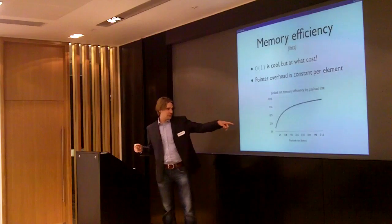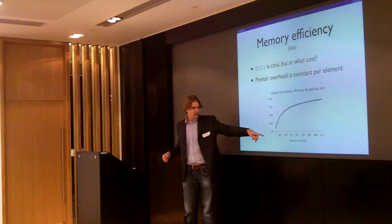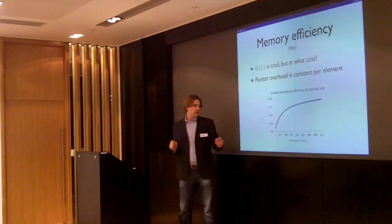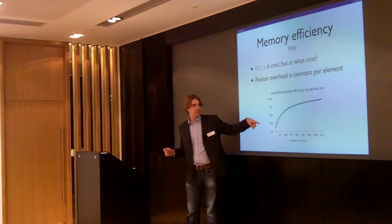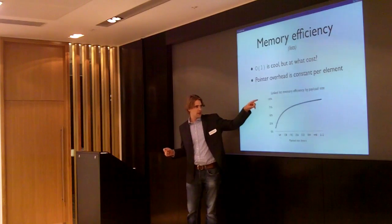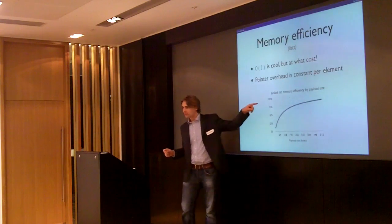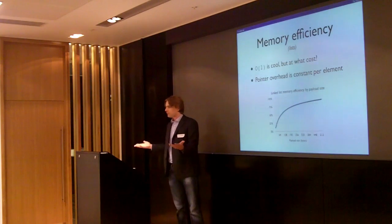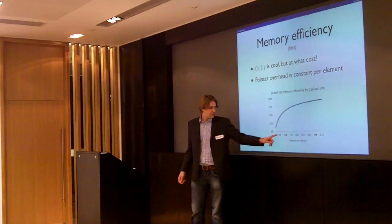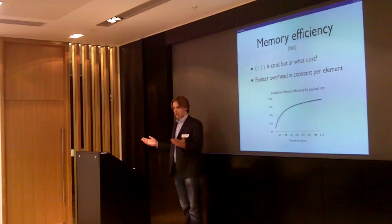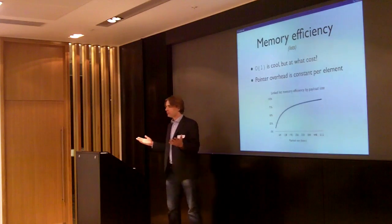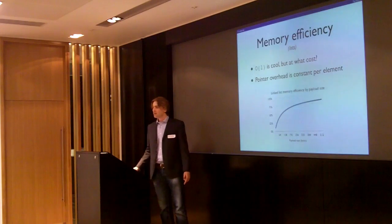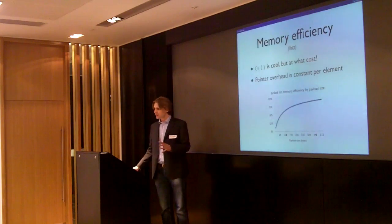I tried to visualize this in a graph, plotting the payload size of the different elements in the list against efficiency — defined as the actually used number of bytes divided by the memory for your total payload. What you see is that for very small values, say 32-bit values in your list, the efficiency is extremely low. That's exactly where we decided to take a look and improve.